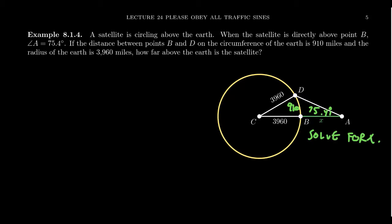So notice that this distance right here, the distance between B and D, this is not a straight line. This is the arc of a circle. And so we know that the arc of BD is 910 miles. That's important because if we think of the circumference of a circle, we can get back to the arc length formula.